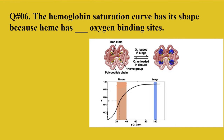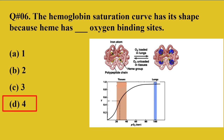Question 6: The hemoglobin saturation curve has its shape because heme has how many oxygen binding sites? A: 1, B: 2, C: 3, D: 4. The right option is 4. Hemoglobin is a quaternary structure made up of four polypeptide chains, each containing an iron atom. So it has the capacity to carry four oxygen binding sites.